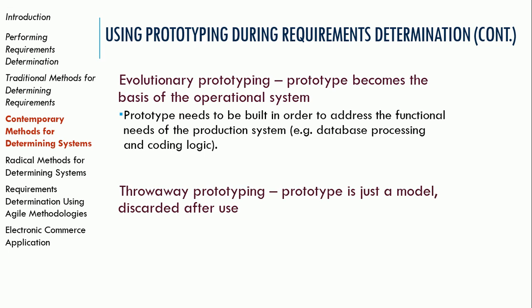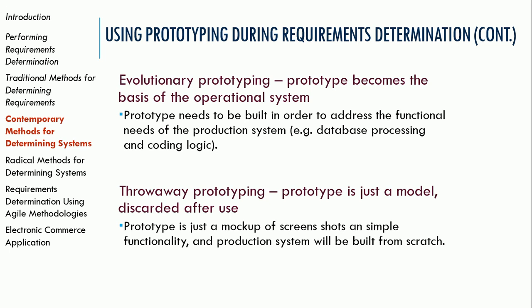The other type is throwaway prototyping, where we make a prototype but know it's not going to become the real system. This is a proof of concept to confirm we can develop the system, then scale it up by building a real system. In a large project, you won't be able to scale that prototype, so you build it to refine your understanding of requirements and then throw it away and build a different system using different technology. Those are the two options: evolutionary and throwaway prototyping.